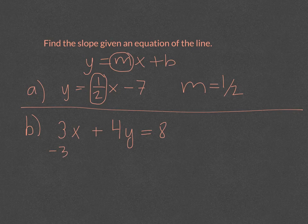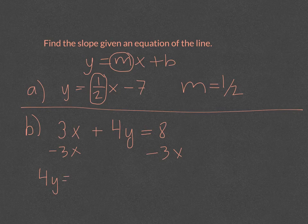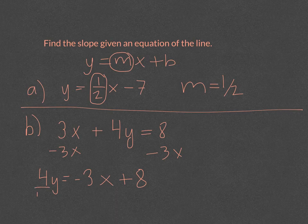So I will subtract the 3x over, and I will get 4y is equal to negative 3x plus, because it's positive, 8. And then just divide each piece of my equation by 4.